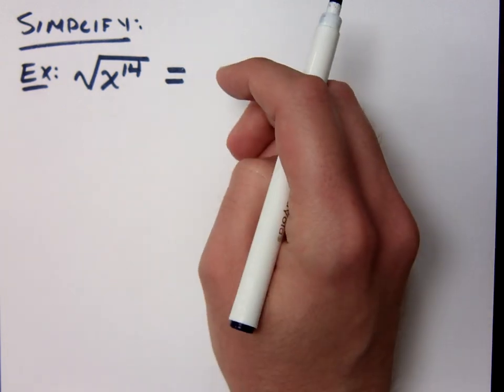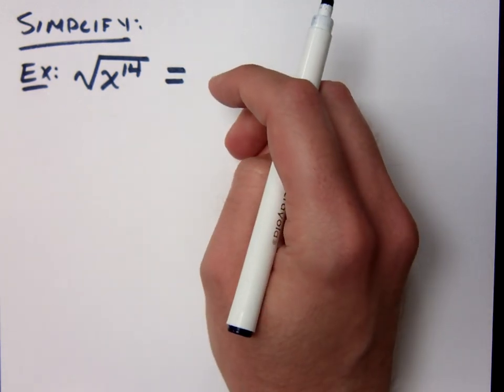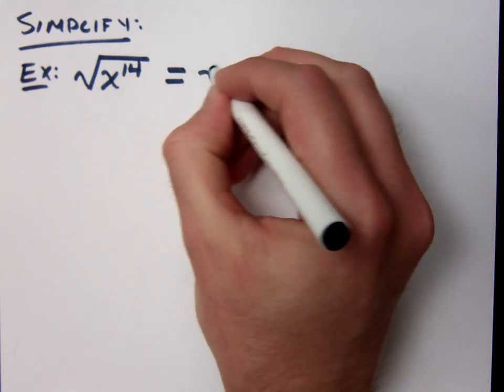The square root of x to the 14th, if you had me for Algebra 3-10, you know the answer. It's x to the 7th.